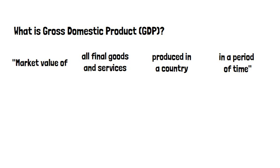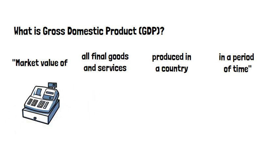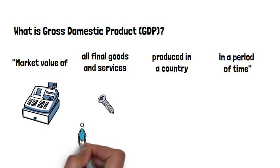Let's have a look at the different parts of this definition. By market value, we mean the price that is actually paid for goods and services. By final, we mean goods and services that are consumed and not things that are used as inputs into something else that is sold later. So, if you buy a screw to fix your home, then this is counted as part of GDP.